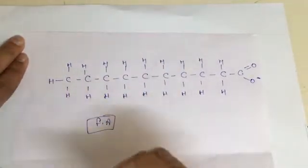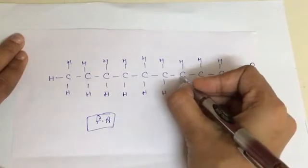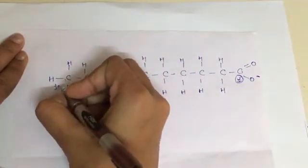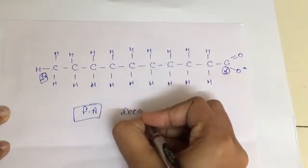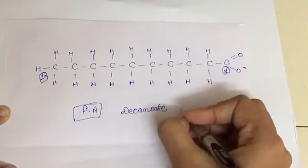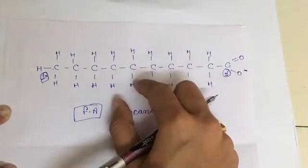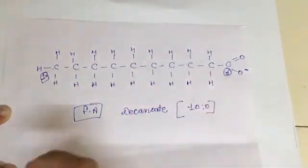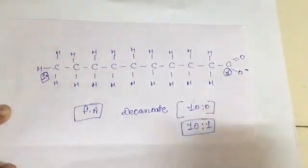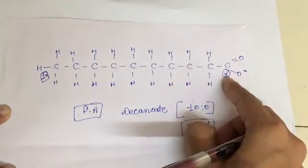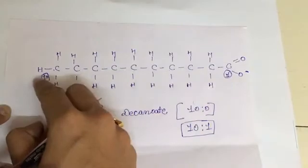The naming of every fatty acid starts from the carboxylic functional group: 1, 2, 3, 4, 5, 6, 7, 8, 9, and 10. These are 10 carbons, so we name it decanoate. Since there is no double bond present, the shorthand notation given to this structure is 10:0. The numbering always starts from the first carbon of the functional group and goes to the end of the chain.